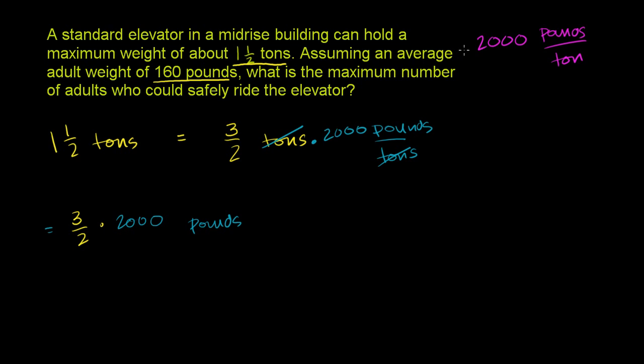If we multiply 3/2 tons times 2,000 pounds per ton, the tons cancel out. We're left with 3/2 times 2,000 pounds. If there are 2,000 pounds per ton and there are 1 and a half tons, I should multiply 1 and a half times 2,000 to get the number of pounds. This equals 3,000 pounds.